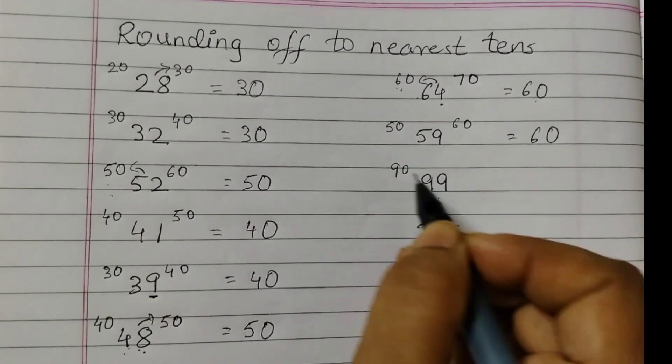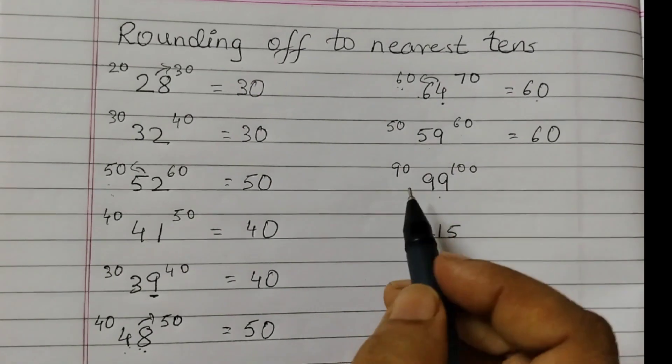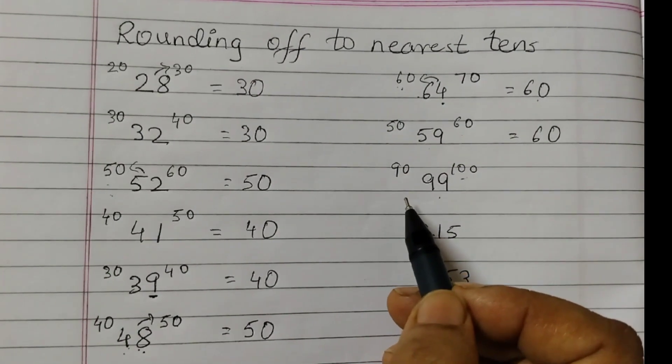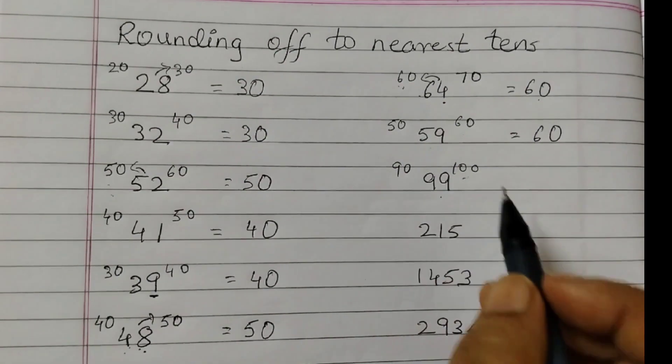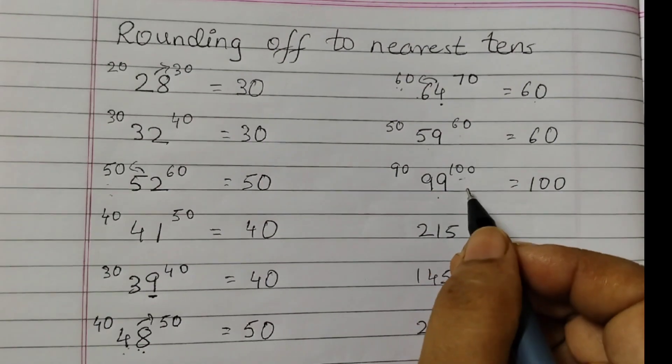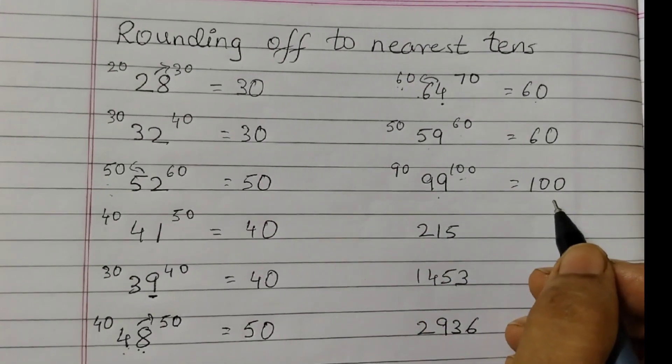99 is between 90 and 100. You don't need to write these numbers here on top. I am writing it just for explanation. 99 is closer to 100, so that's rounded off to 100.